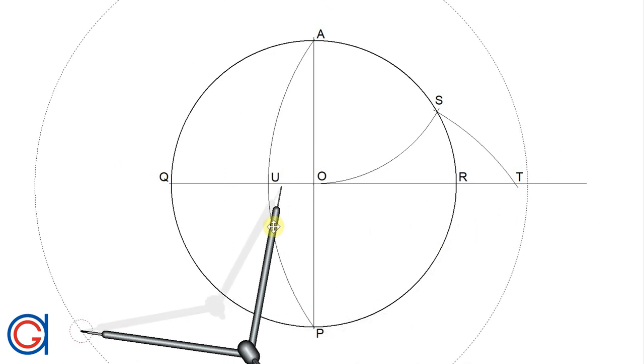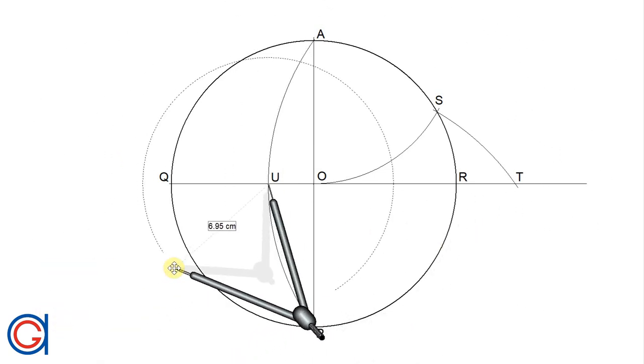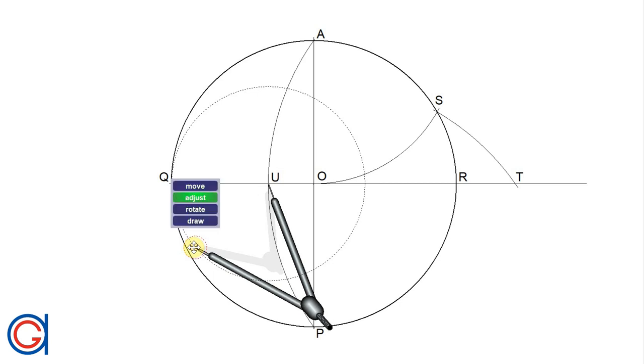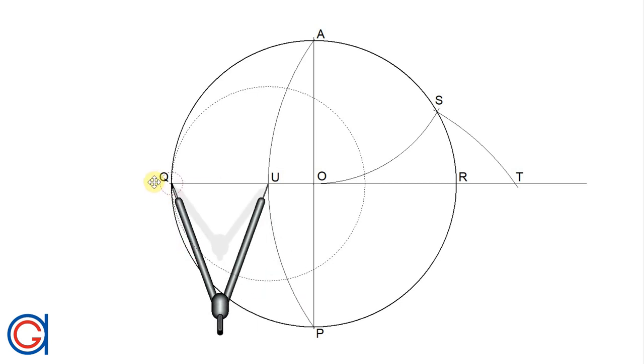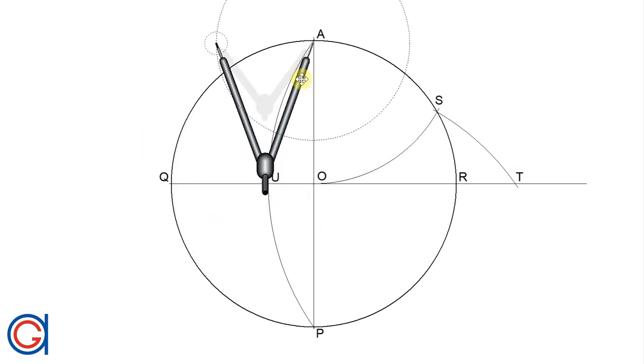So the distance from point Q to point U is the distance of the nine divisions that we are looking to divide our circle into. So now setting our compass to the length QU, we are going to scribe nine arcs on the circumference.